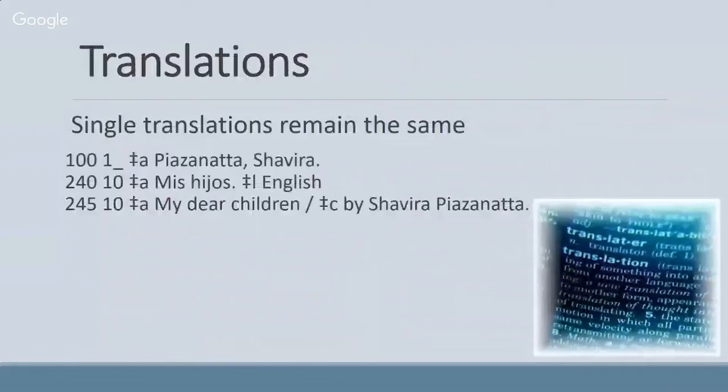Regarding translations, the process is pretty much the same as under AACR2. You have the creator in the 100 field, the 240 is what we know as a uniform title — the title in the original language — and then the 245 field is the title of the item you are cataloging, in this case the English translation of a Spanish title. So that's pretty much the same as under AACR2. Some things haven't changed with RDA.